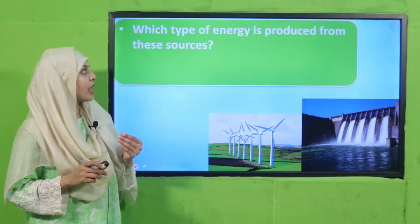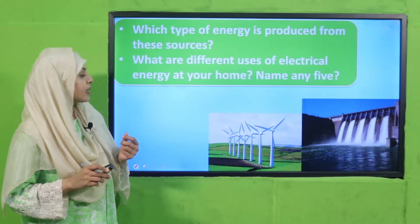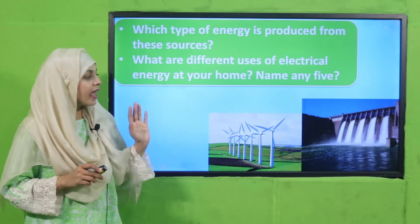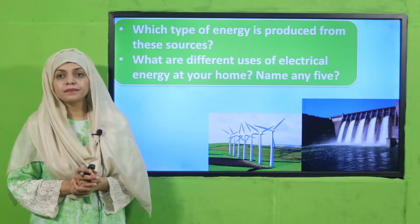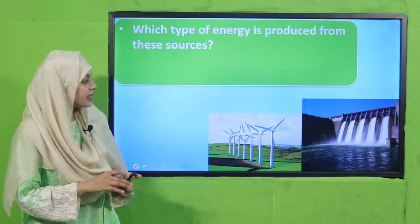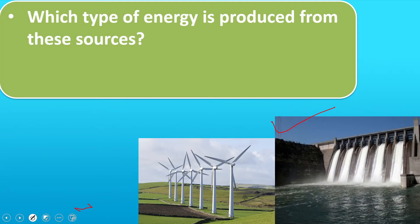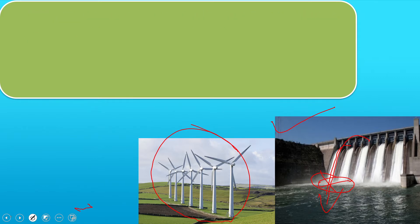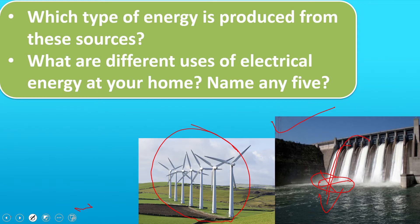Which type of energy is produced from these sources? You can see some sources like water or windmill. This is the dam — it produces electrical energy. This falling water provides energy to the turbine, and those turbines change the energy into electrical energy. Similarly, when these windmills move with the help of wind, they also convert the energy of the wind into electrical energy.